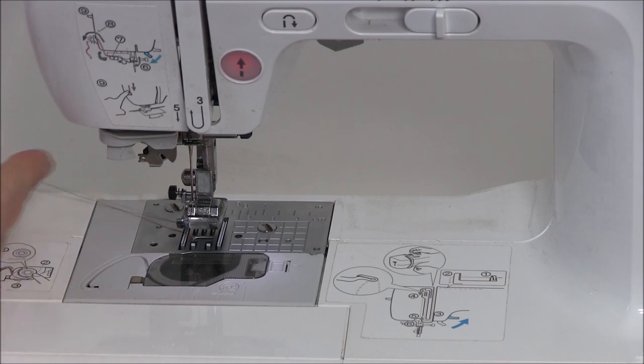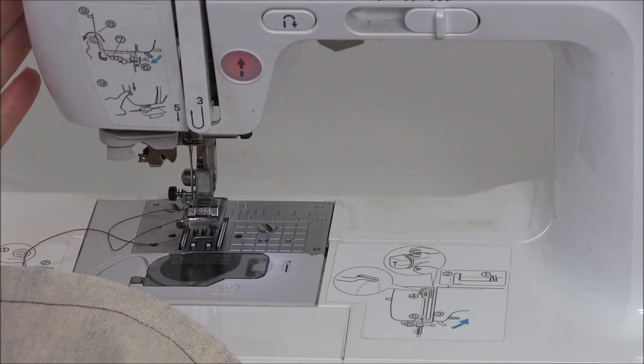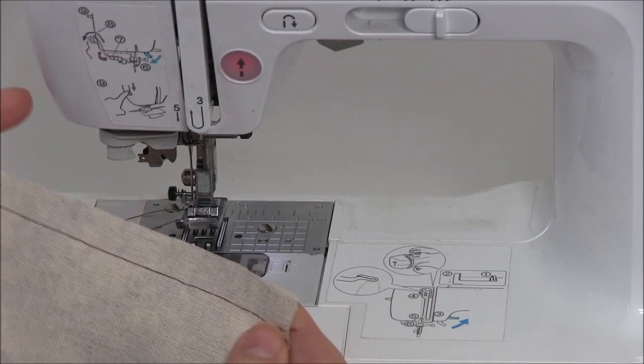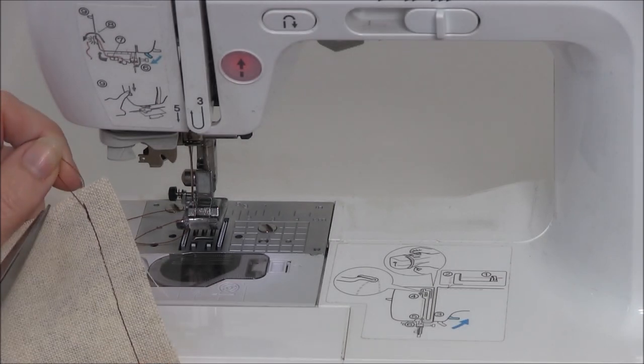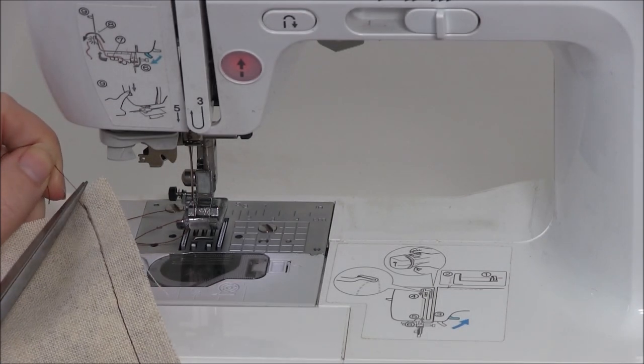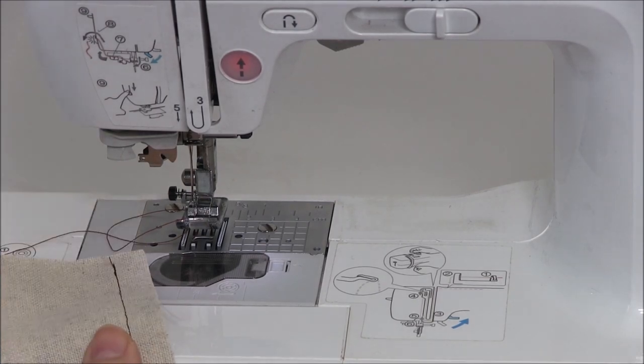You can either snip the threads or use your thread cutter, which most machines tend to have on the side. Here is your seam finished. It's a good idea to always snip your threads as you go; there's nothing worse than finishing a sewing project and having to do them all at the end.